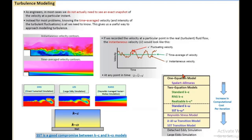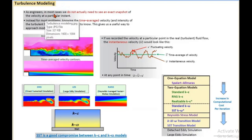Instead of calculating the fluctuation directly, we have certain models that take the time average of the velocity — called the time-averaged velocity. Most models are based on that philosophy. This is called the RANS-based model — that is, the Reynolds-Averaged Navier-Stokes equation. Single-equation and two-equation models including k-epsilon, k-omega, and Reynolds Stress Model are all RANS-based.